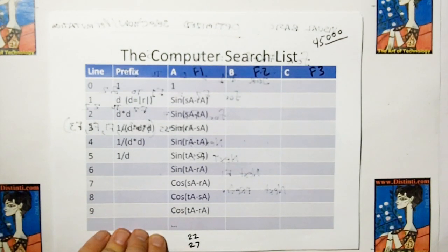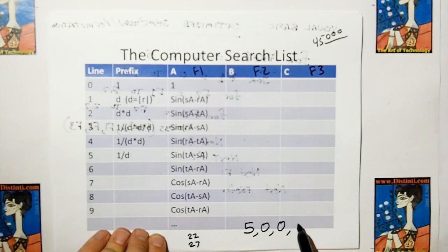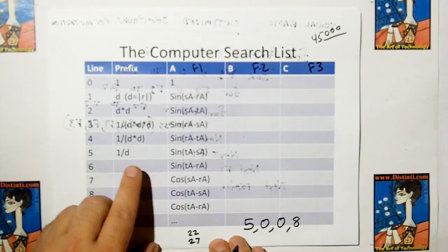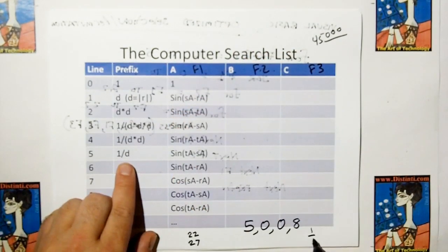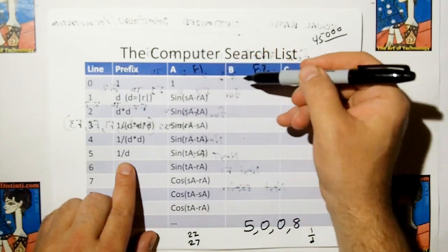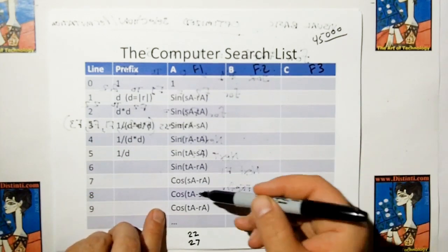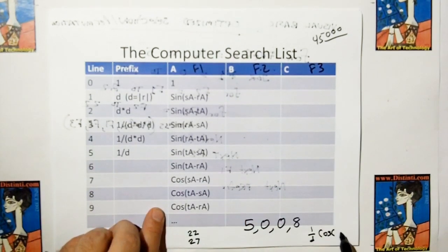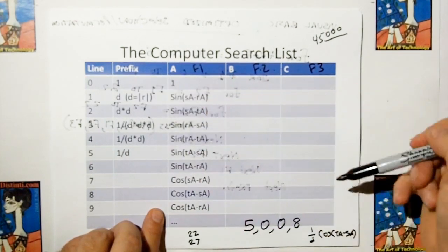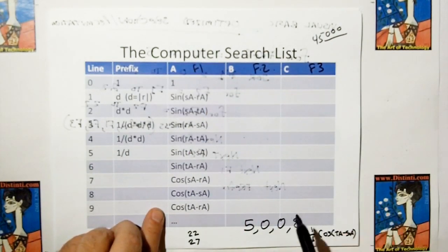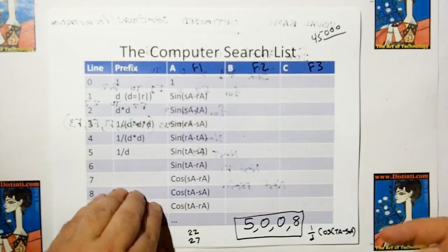So for example, let me give you an example of geometry 5, 0, 0, 8 comes up. That would be 0, 5, which is 1 over D, times 0, 0, which is 1 times 1, times 8, which is the cosine of the target angle minus the source angle. That's how you read the table. So all the geometries come out as a four number code, and that tells how they were permutated through the table.